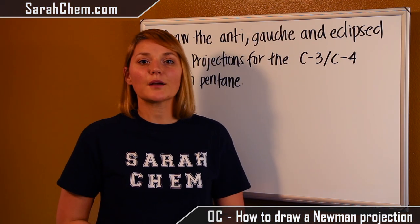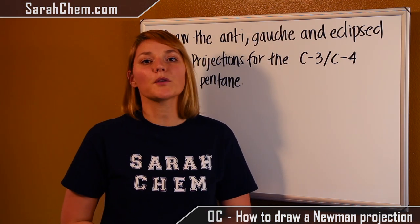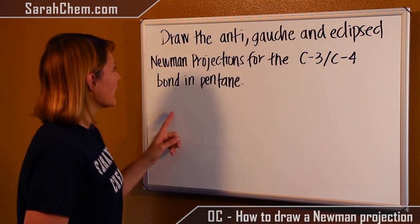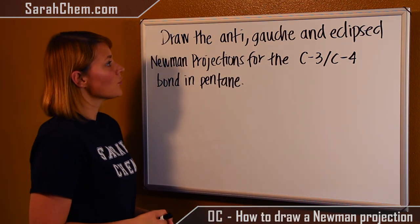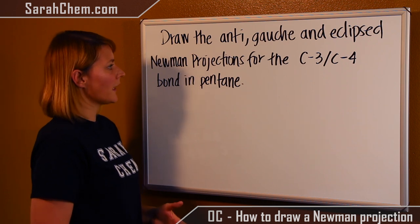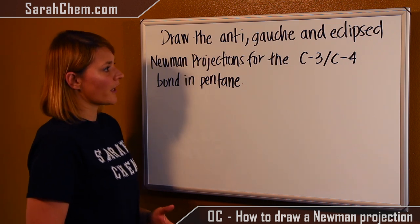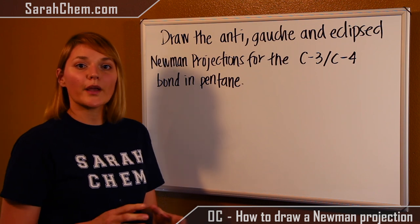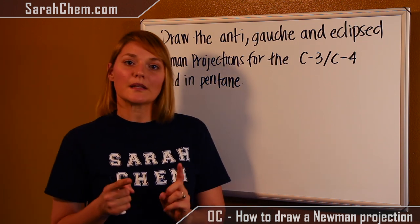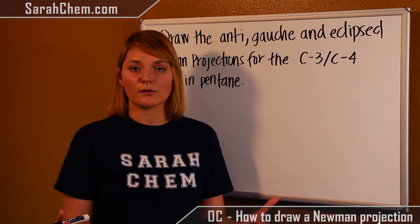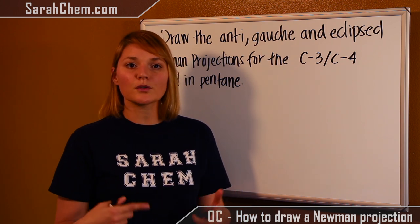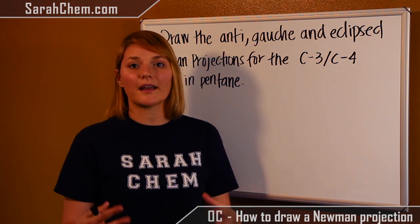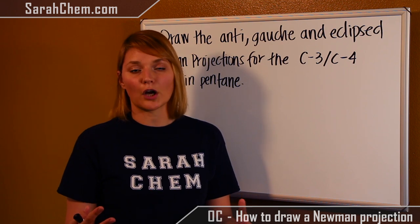Hi everyone. This is a video tutorial to help you understand how to draw a Newman projection. Let's take a look at this example: Draw the Anti, Gauche, and Eclipsed Newman Projections for the C3 and C4 bond in pentane. In a Newman projection, we focus on a particular bond in a bigger compound and examine how free rotation around a single bond is impacted by the substituents on those particular carbons.